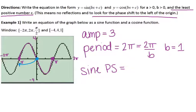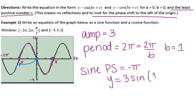Now that we have the phase shift for sine, we can write the equation. We have y equals a, which is 3, sine of b, which is 1, so that's x, and then plus the phase shift. Since it's always the opposite when you put it into the parenthesis, it becomes x plus π. So the equation for sine is y = 3sin(x + π).